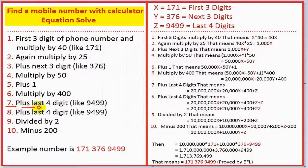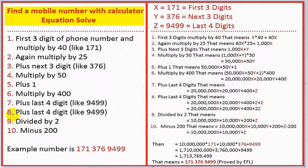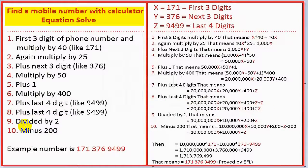Step seven: plus the last four digits, like 9499. That means Z equals 9499, the last four digits. Step eight: plus the last four digits again — Z plus Z equals 2Z.